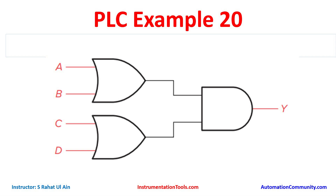A and B will be connected in parallel because there is an OR logic gate between A and B. Similarly, for C and D there is an OR logic gate, so C and D will be used as normally open contacts connected in series. A plus B will be connected in series with C plus D.